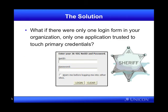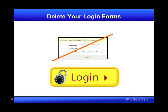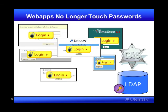Wouldn't it be dreamy if there were only one login form in your organization, only one application trusted to touch these primary credentials? CAS seeks to be that application. It's looking to be the web application that end users interact with to present usernames and passwords, or whatever their credentials are going to be. It's a trusted intermediary that brokers authentication to these other applications. The idea is to get rid of all your individual application login forms — users no longer present credentials to particular applications on campus. Instead, all of them make use of CAS and the CAS login experience for authentication.